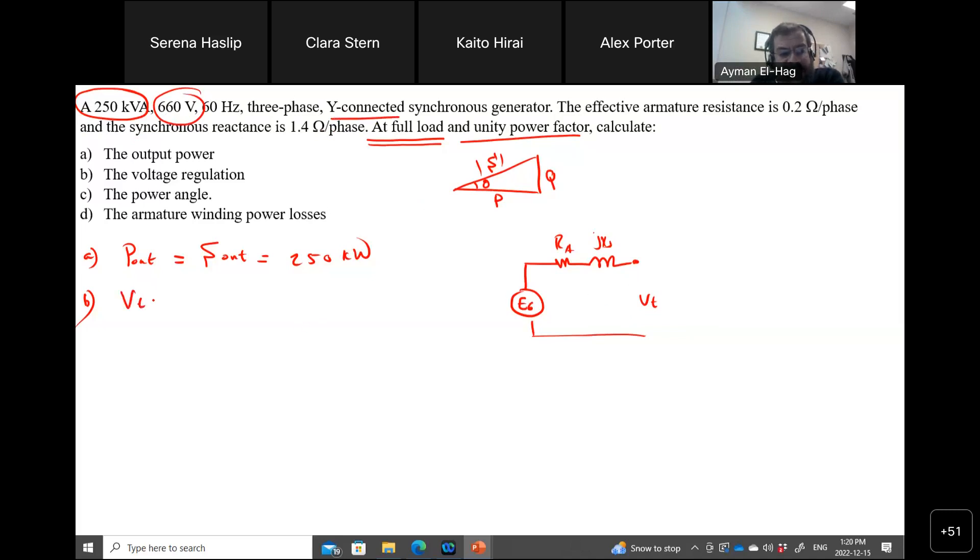your V_T per phase will equal to the line-to-line voltage, 660, divided by root 3. And I will make the phase voltage as my reference. So I'll give it an angle of 0. So this is equal to 381 angle of 0.